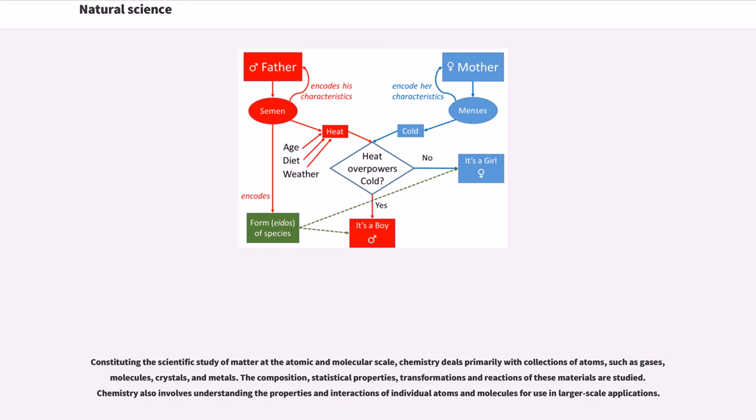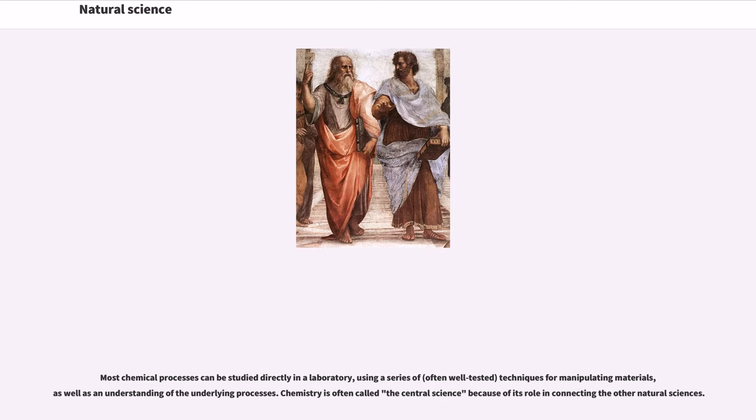Constituting the scientific study of matter at the atomic and molecular scale, chemistry deals primarily with collections of atoms, such as gases, molecules, crystals, and metals. The composition, statistical properties, transformations and reactions of these materials are studied. Chemistry also involves understanding the properties and interactions of individual atoms and molecules for use in larger scale applications. Most chemical processes can be studied directly in a laboratory, using a series of techniques for manipulating materials. Chemistry is often called the central science because of its role in connecting the other natural sciences.